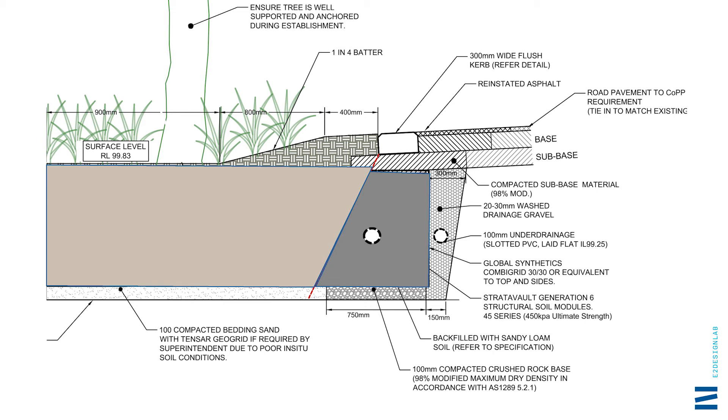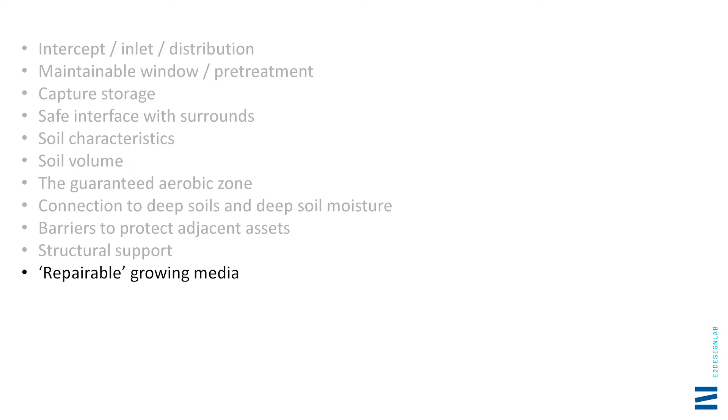Nearly at the end. The last item on the checklist is a repairable growing media. You want to think about the fact that you're putting something in the ground and need to anticipate that someone's going to rip through it putting in another service at some point. Are you happy to remove a row of Silva Cell cells and repair and replace them? Or would you go to a cobble system? People at the City of Melbourne suggested they preferred that versatility because it would be easier and less specialised to repair. I'm not saying which is best — these are things you need to consider.